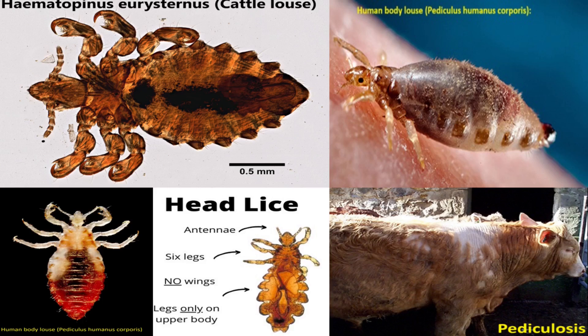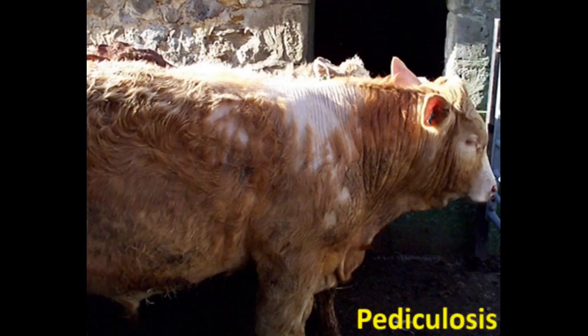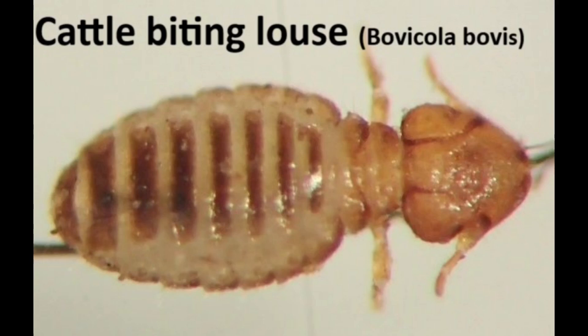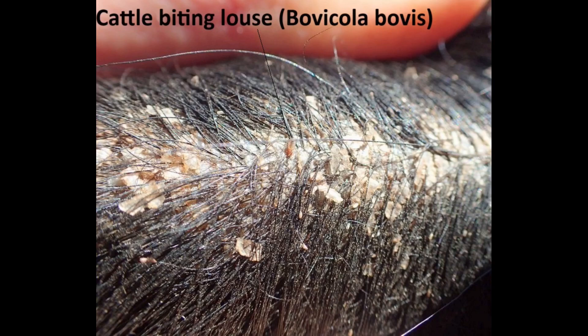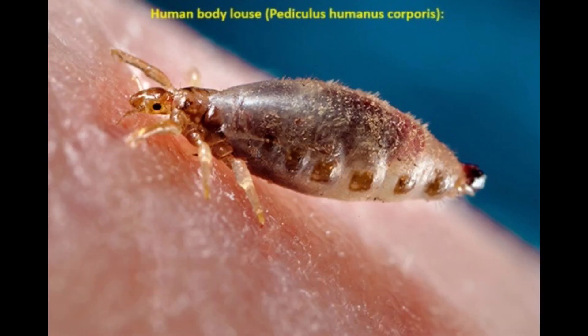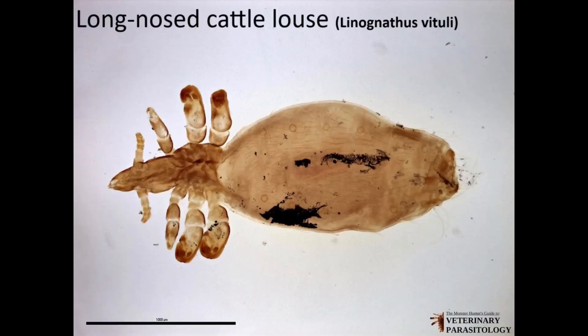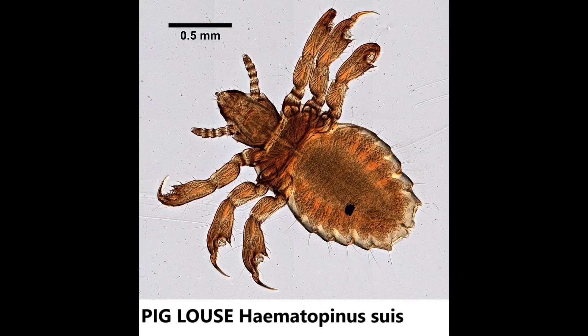Lice have evolved with clawed legs that allow them to grip tightly onto hair or feathers. Lice infestations are called pediculosis. Infestations cause irritation, skin infections, and in severe cases, anemia due to blood loss. Example species include cattle-biting lice found on cattle, which cause itching and skin irritation; human body lice, which can transmit diseases like typhus; long-nosed cattle lice; and pig lice.